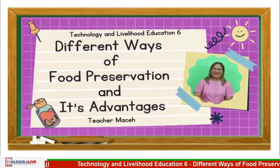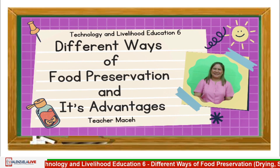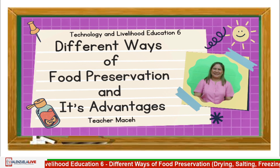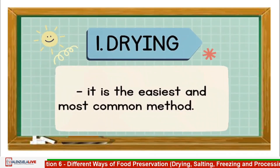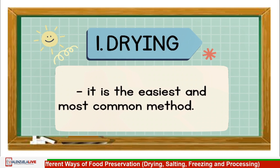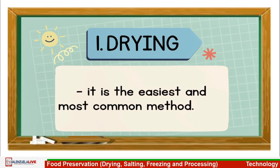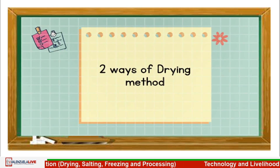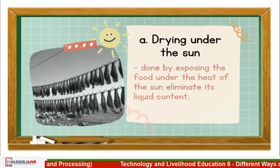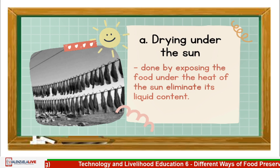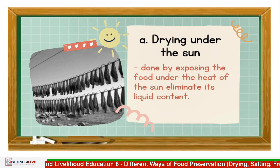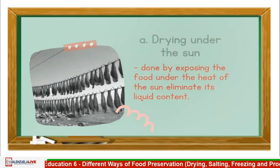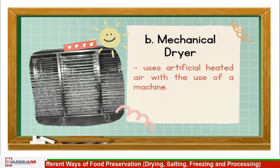Different ways of food preservation and its advantages. Drying — it is the easiest and most common method. There are two ways of drying: the first one is drying under the sun, done by exposing the food under the heat of the sun to eliminate its liquid content. The second one is mechanical dryer, which uses artificial heated air with the use of a machine.